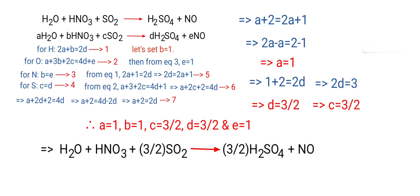So to get whole numbers we need to multiply the equation by a coefficient of 2. Therefore 2 H2O plus 2 HNO3 plus 3 SO2 gives us 3 H2SO4 plus 2 NO. The equation is now balanced.